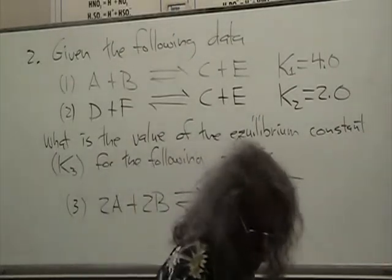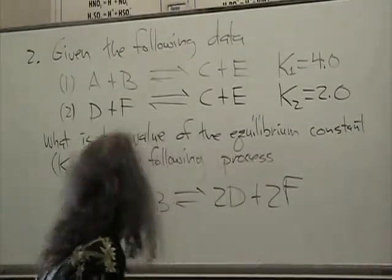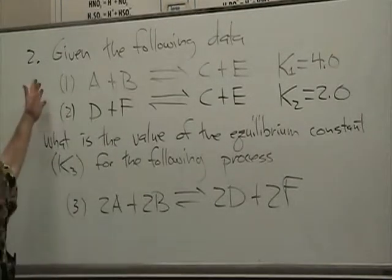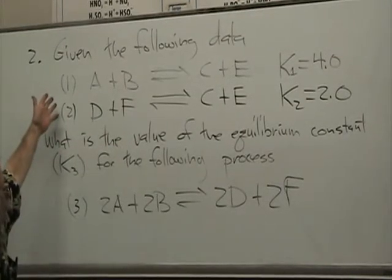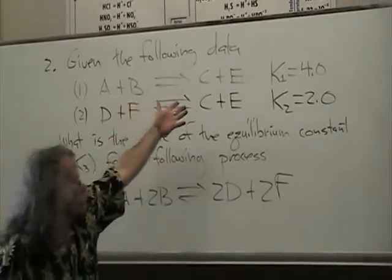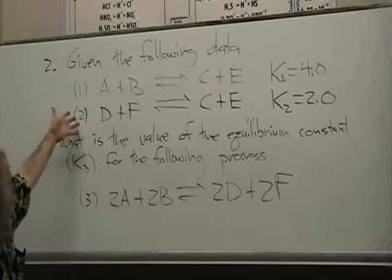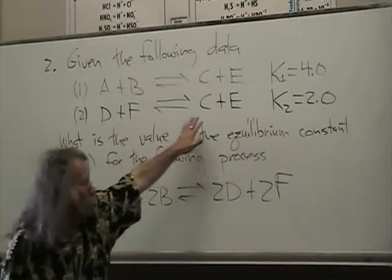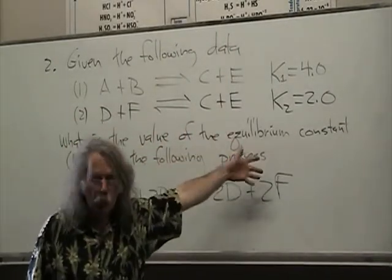Okay, this is problem two. Given the following data, I have two equilibrium processes. A plus B going in equilibrium with C plus E, and the second equilibrium is D plus F in equilibrium with C plus E. I have the equilibrium constants.